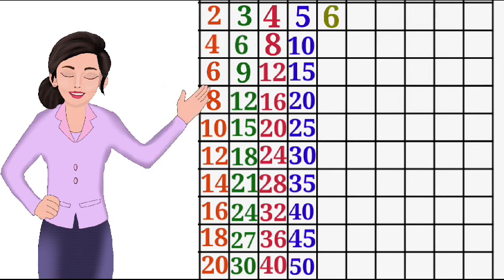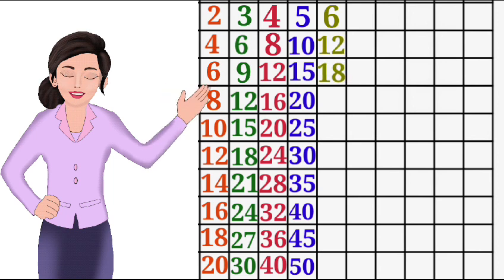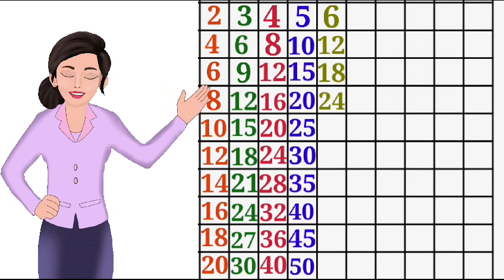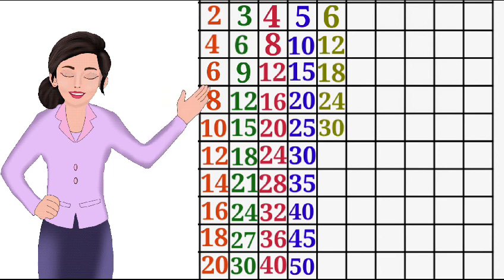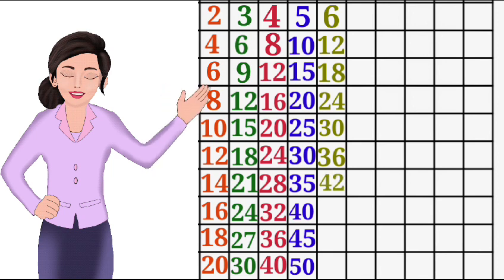6-2 the 12, 6-3 the 18, 6-4 the 24, 6-5 the 30, 6-6 the 36, 6-7 the 42.